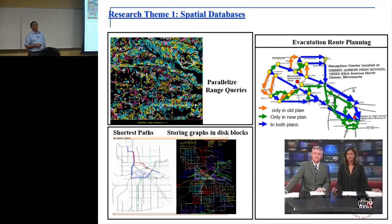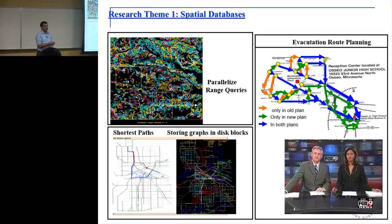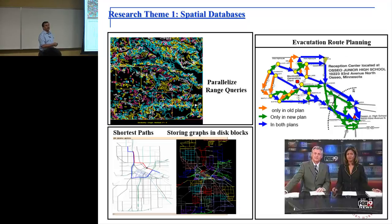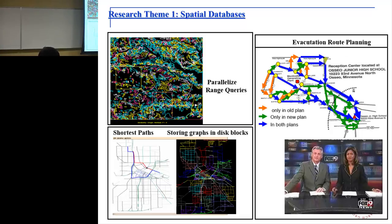One new routing problem that came our way is evacuation route planning. The main difference here is that you are moving a large number of people. Being in Florida, I don't have to explain what hurricane evacuations look like. Before I go to the rest of the talk on spatial data mining, let me quickly share a short four-and-a-half-minute video from Fox TV on our work on evacuation route planning.